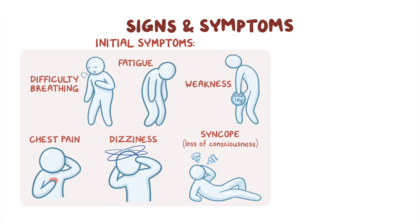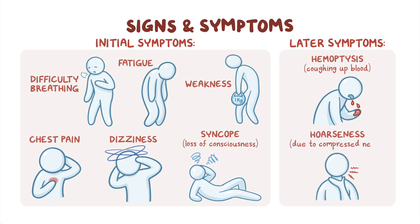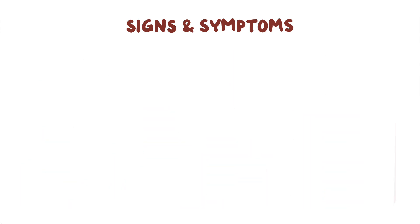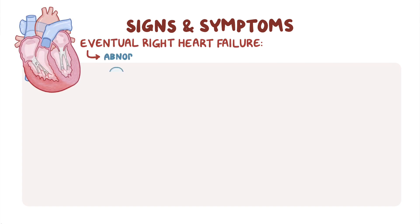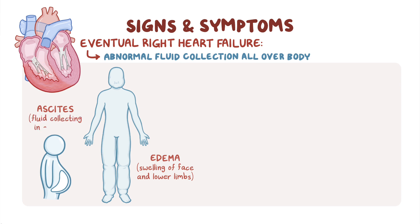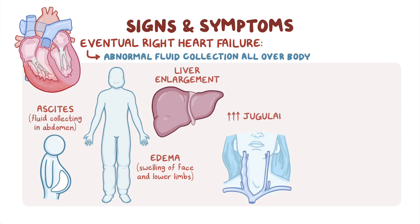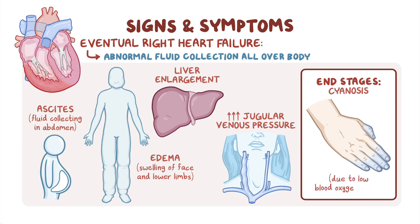As the disease progresses, signs of complications may start appearing, including hemoptysis, or coughing up of blood, and hoarseness due to compression of a nerve in the chest by an enlarged pulmonary artery. Eventually, untreated individuals end up in right-sided heart failure, which causes abnormal fluid collection all over the body, resulting in edema, or swelling of the face and lower limbs, ascites, or fluid collecting in the abdomen, liver enlargement, raised jugular venous pressure, and in the end stages, cyanosis, or abnormal bluish discoloration of the skin due to low blood oxygen levels.